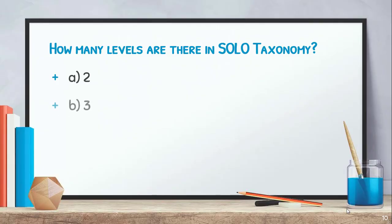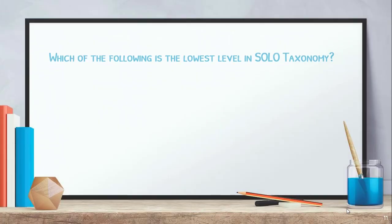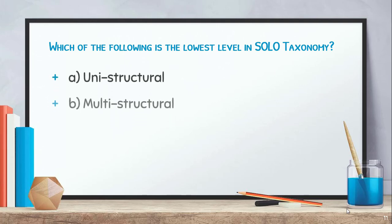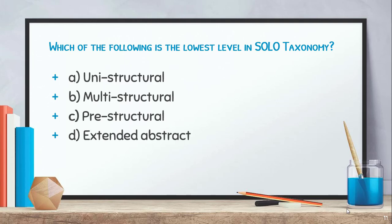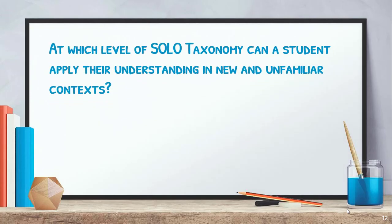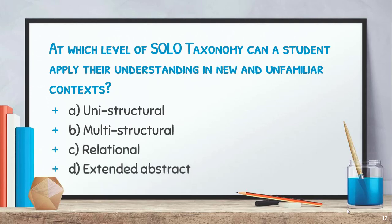How many levels are there in SOLO taxonomy? There are five levels: pre-structure, uni-structure, multi-structure, relational, and extended abstract. The next question is: which of the following is the lowest level in SOLO taxonomy? The lowest level is pre-structure. At which level of SOLO taxonomy can a student apply their understanding to new and unfamiliar contexts? The right answer is extended abstract, as it is the highest level with comprehensive understanding.